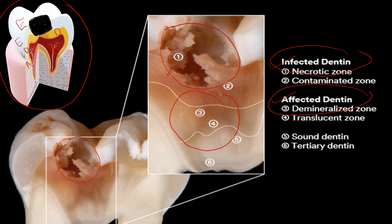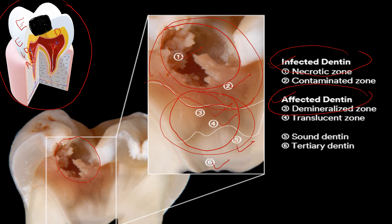So, the uppermost layer is infected dentine and the innermost is affected dentine. Now let's look at the differences. In infected dentine there is the necrotic zone and the contaminated zone. You can see the demarcation here — this area is infected dentine, and this area is affected dentine. In affected dentine you have the demineralized zone and the translucent zone. Beneath the affected dentine you have sclerotic dentine and tertiary dentine — the various zones of carious dentine we studied in first year.